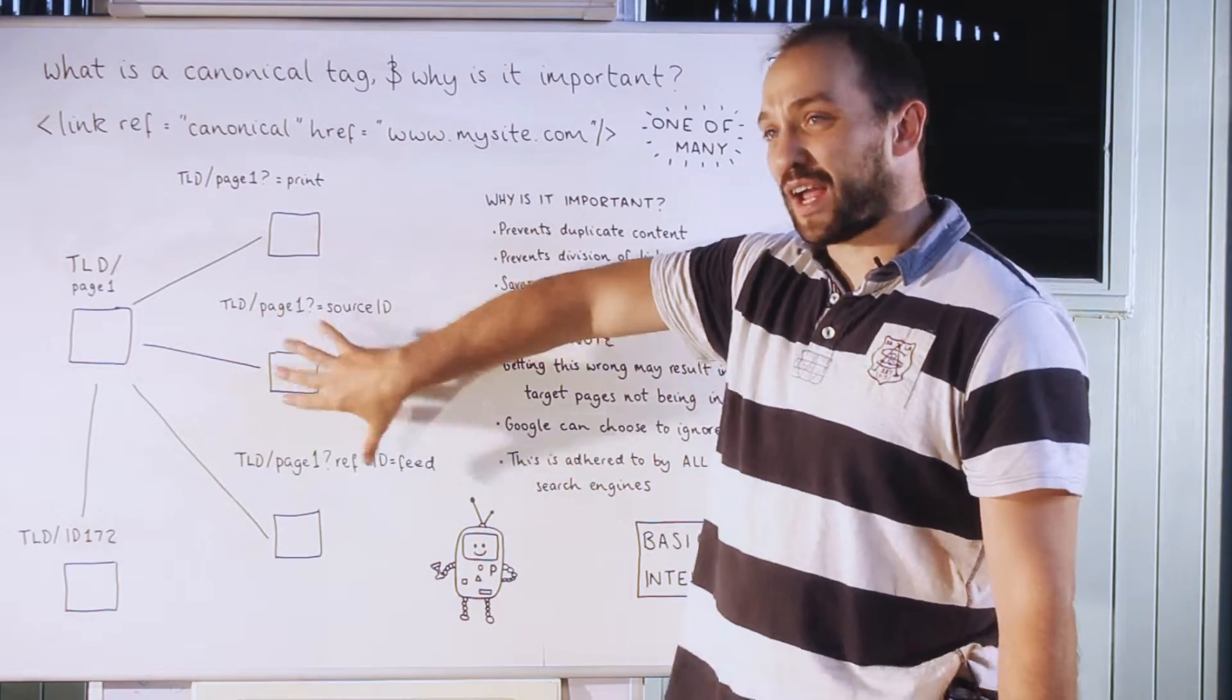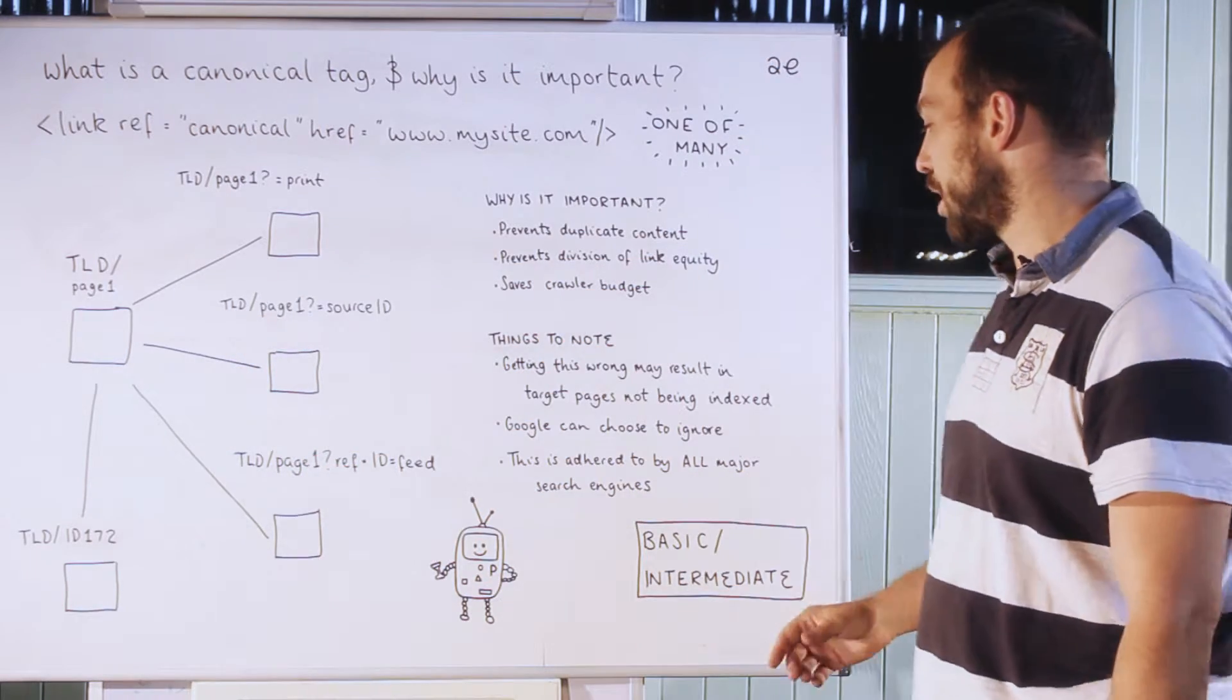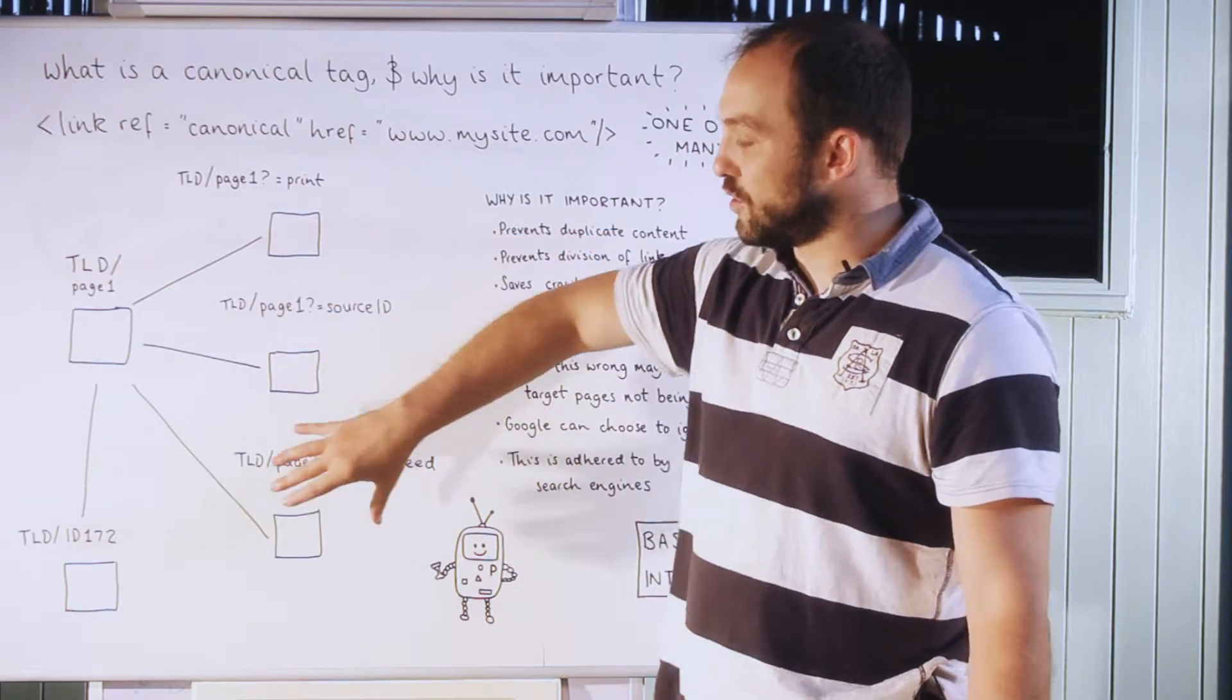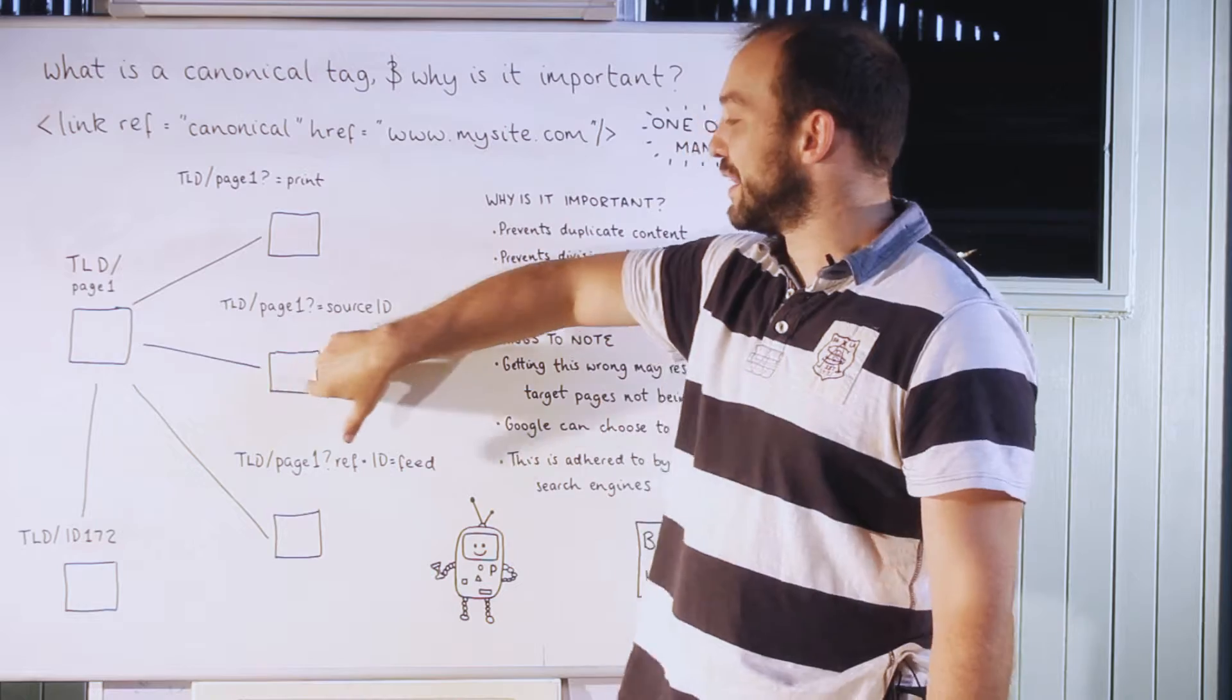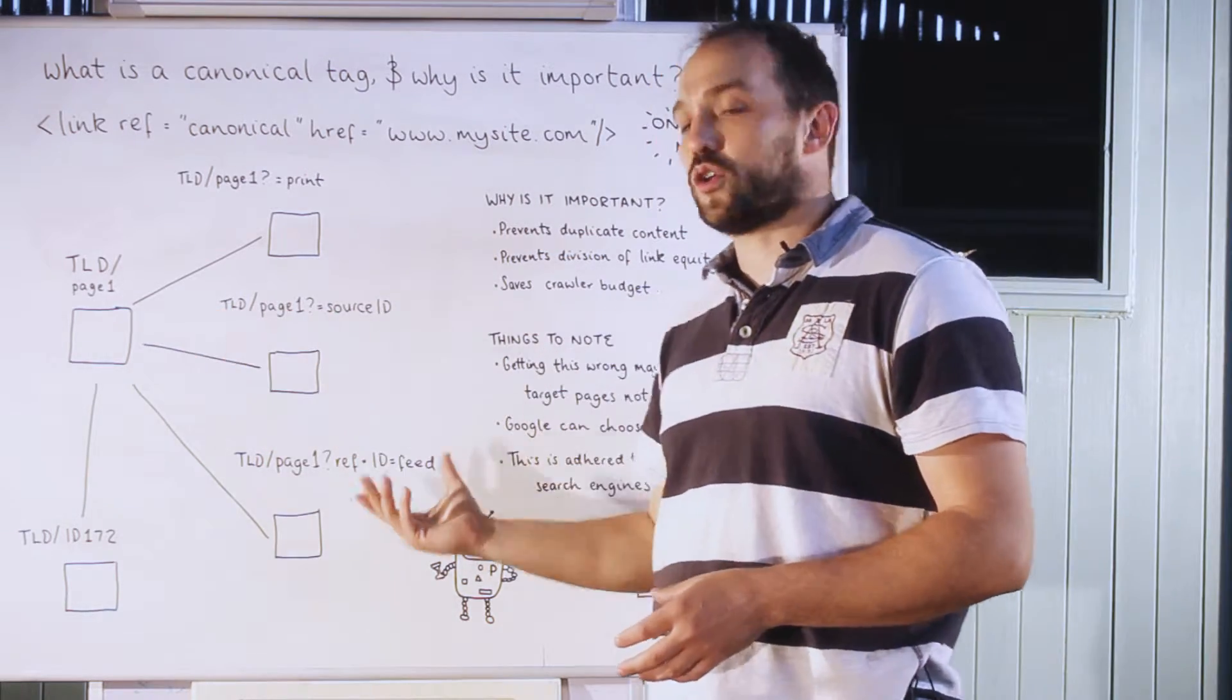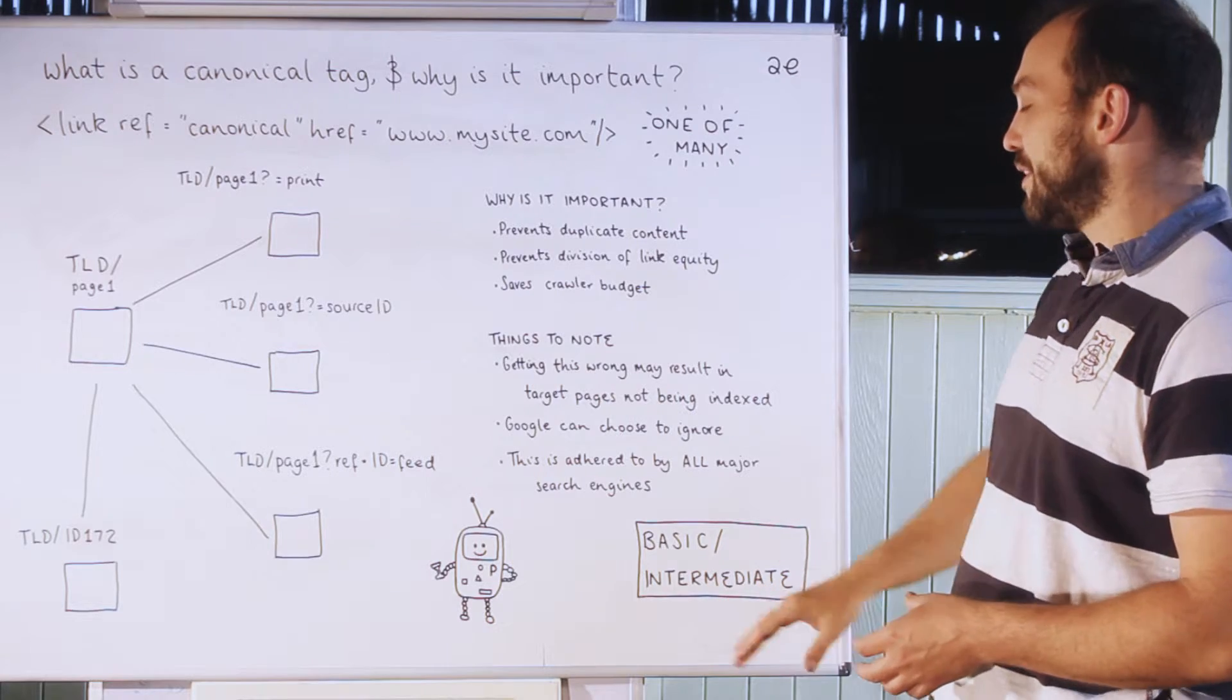Google can choose to ignore this. So what Google sees, if you're saying this is the same page as this page and they're completely different, Google over time will learn that and choose to ignore your canonical tags site-wide. And this is did by all the major search engines, so it's a pretty important tag.